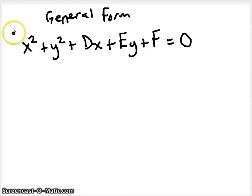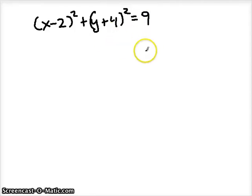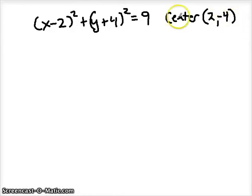To show how we move from standard form to general form, take X minus 2 squared plus Y plus 4 squared equals 9. The center is 2 and the opposite of positive 4, so negative 4, giving center (2, −4). R squared is 9 so the radius is 3. To convert, we need to expand the binomials squared — squaring means multiplying by itself. So X minus 2 times X minus 2, and using FOIL: X squared, minus 2X, minus 2X, plus 4, which simplifies to X squared minus 4X plus 4.